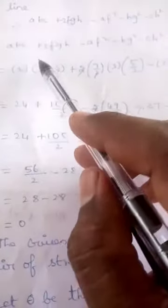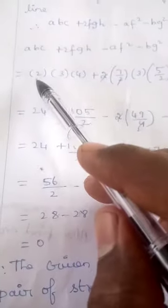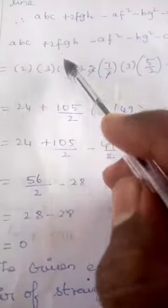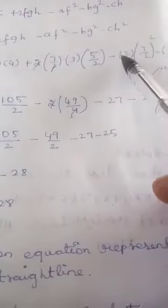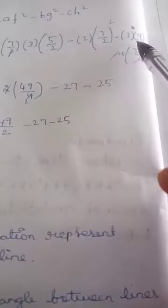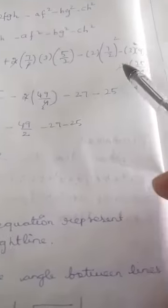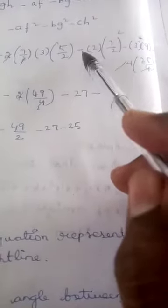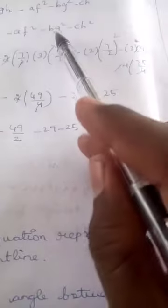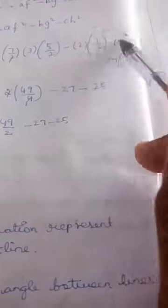Substituting: abc = (2)(3)(4) = 24. Then 2fgh = 2(7/2)(3)(5/2) = 105/2. Next, af² = (2)(7/2)² = 49/2, bg² = (3)(3)² = 27, and ch² = (4)(5/2)² = 25.